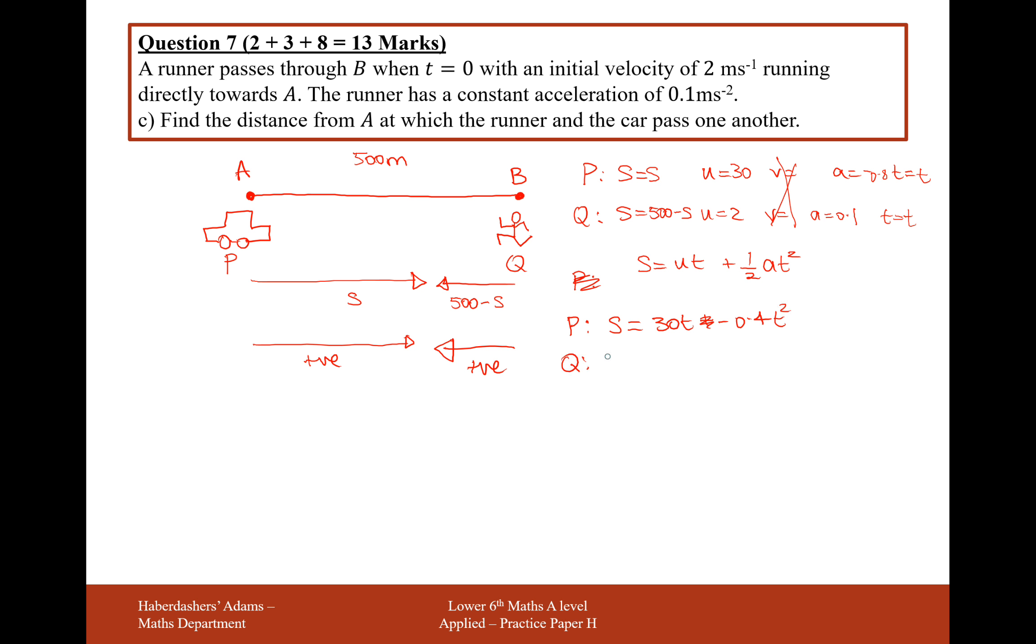For Q, the distance that the runner has travelled is going to be 500 minus S, the distance that the car has travelled. This is going to equal 2T plus half of the acceleration, so 0.05T squared. Just rearranging this equation for Q, it's going to be 500 minus 2T minus 0.05T squared.